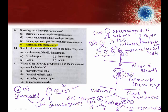Sertoli cells are nourishing cells in the testes. The question asks to identify a hormone secreted by them. Gonadotropins are synthesized by the pituitary; relaxin is from the ovary during the last stage of pregnancy; testosterone is from Leydig cells of the testes. The only correct answer is inhibin. Sertoli cells are also called nurse cells as they provide nourishment to developing sperms, and additionally secrete inhibin.